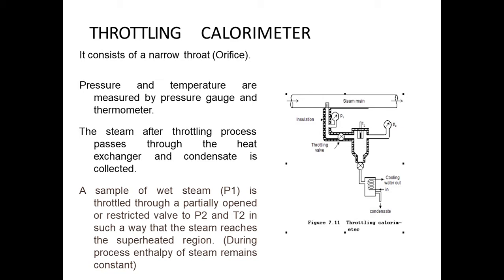For example, if you have a vehicle air tube with a small puncture, on one side you have very high pressure and on the other side it is very low pressure. The air pressure is reduced by passing through the small hole — that is called the throttling process. Similarly, when water passes through a tap, one side has high tank pressure and the other side has atmospheric pressure. When you open the tap, the pressure becomes atmospheric — that is again a throttling process.